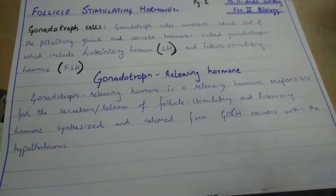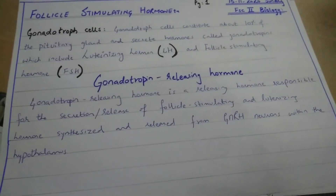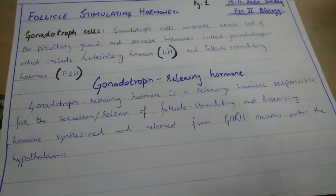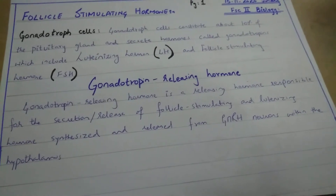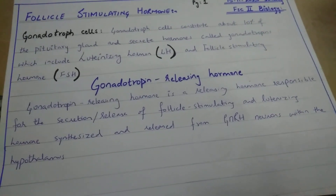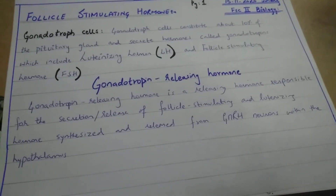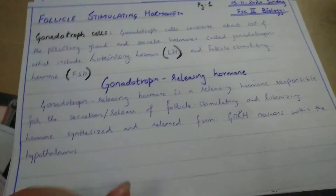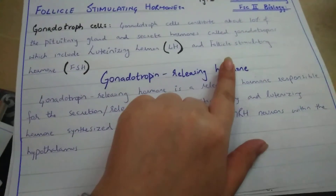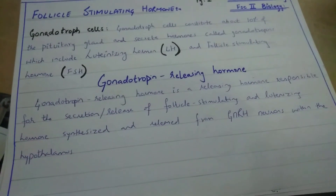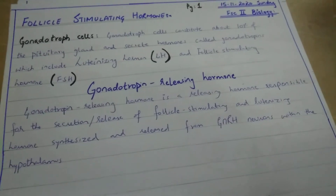Gonadotroph cells are those cells placed in the pituitary gland that make up about 10% of it. These gonadotrophs release gonadotropins — luteinizing hormone and follicle stimulating hormone are two examples of gonadotropins.